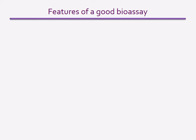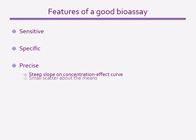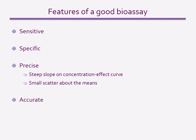A good bioassay will have several features. A sensitive assay will be able to detect compounds at low concentrations. A specific assay will be able to distinguish between compounds acting at different receptors. An assay is precise if it shows a steep dose response curve — in other words, the response is apparent over a narrow range of concentrations and a small increment in concentration produces a large increase in response. The dose response curve should also be reproducible with little variation between measurements at different times, on different preparations, at the same concentration. An additional consideration in the pharmaceutical industry is that assays need to be quick, and cell-based bioassays are substantially more high throughput than assays involving tissues, organs or especially animals.